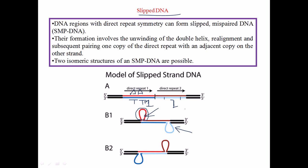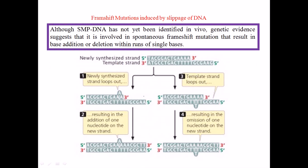The important factor required to make slipped DNA is that you must have poly-nucleotide sequences — stretches of the same type of DNA sequence one after another, whether A, T, C, or G. Without the same type of sequences, you cannot form the slipped DNA portion.